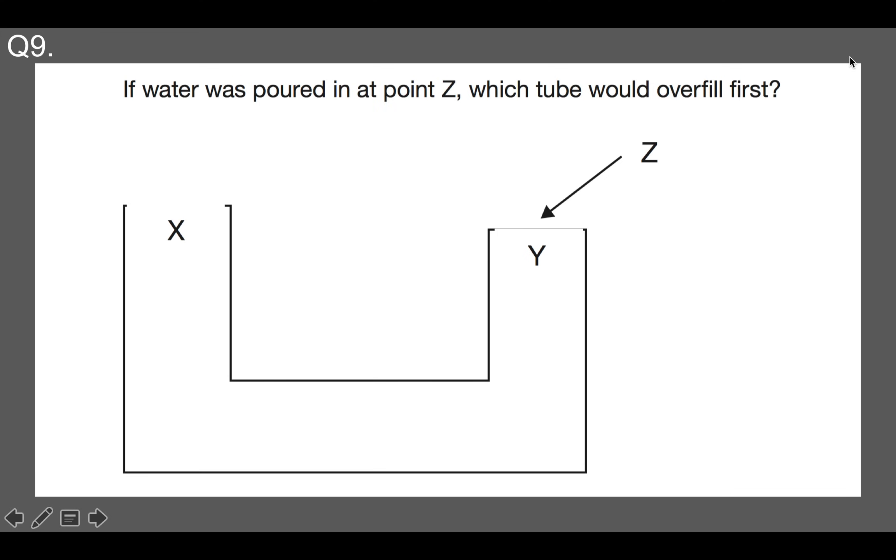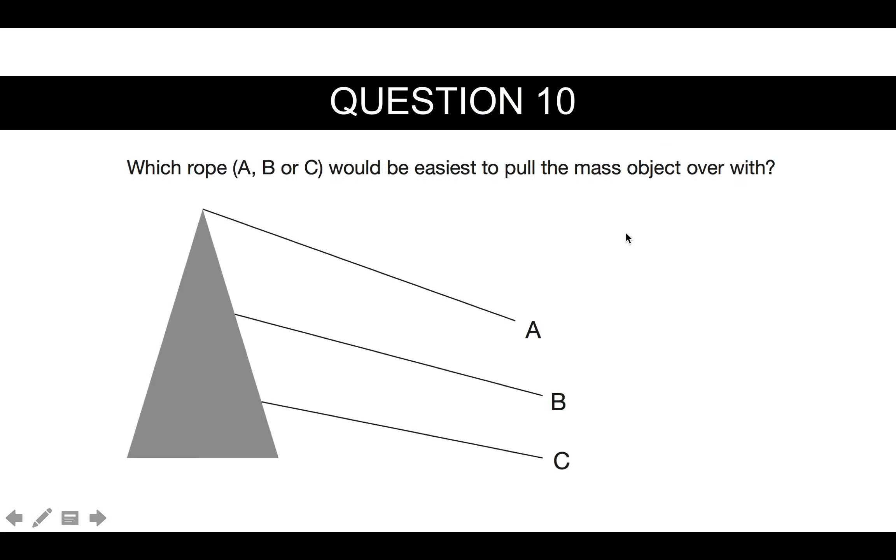Question nine. If water was poured in at point Z, which tube would overfill first? Now, because Y is at a lower point than X, therefore, the water would overflow there first of all.